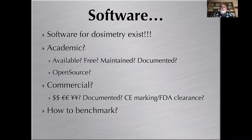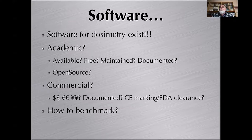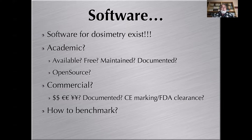Several questions are raised by academic software. First is availability — even if it's developed by a colleague, if you don't have access to it, it's as if it doesn't exist. Is it free? Is it maintained? Most academic software is lost when the student who developed it leaves. Is it documented? Most are research tools where only the developer knows how to use them and documentation was never written. In my opinion, the only way to ensure sustainable development of academic software is to release it as open source, as is being done with the open-source OpenDOS 3D project.